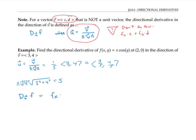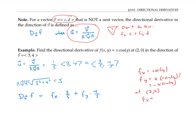So I'm looking for D_u of f, which is f_x times 3/5 plus f_y times 4/5. Here f_x equals cos(y) and f_y equals negative x·sin(y). At the point (2, 0): f_x equals cos(0), which is 1, and f_y equals negative 2·sin(0), which is 0. Therefore the directional derivative is 1 times 3/5 plus 0 times 4/5, or just 3/5.